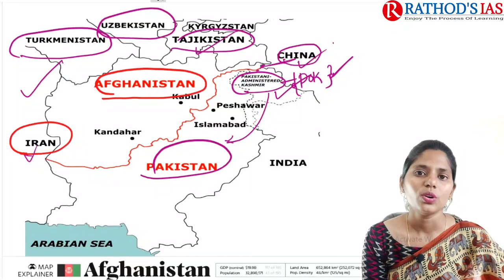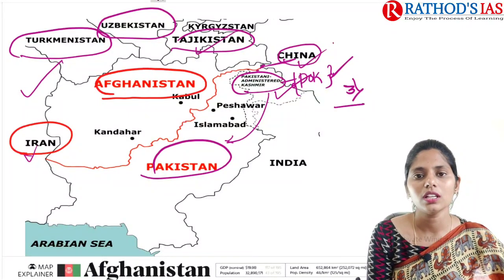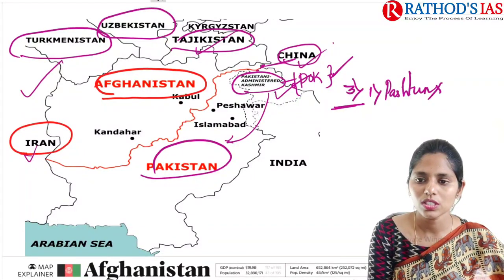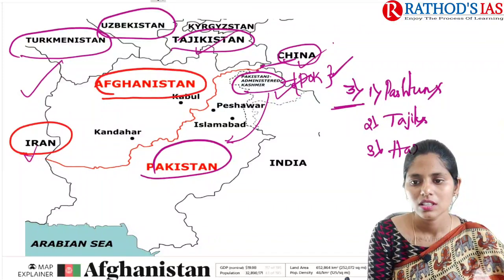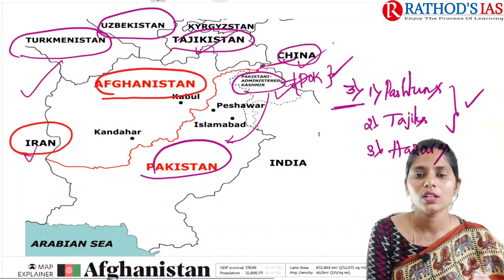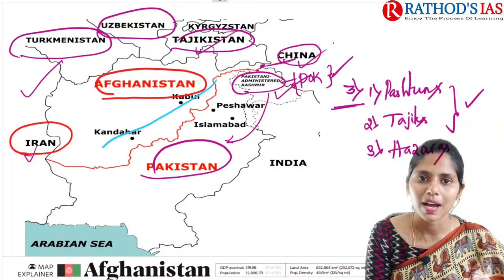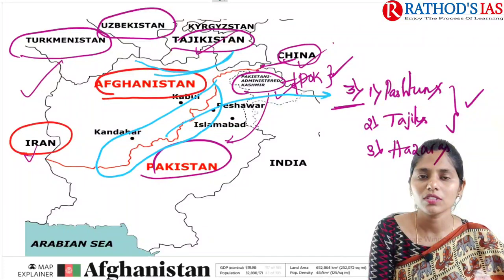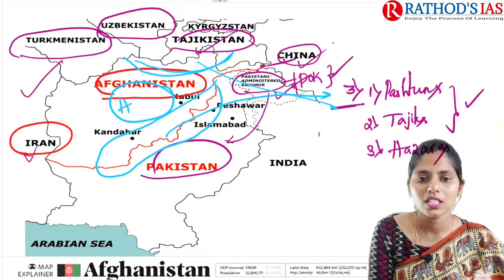We need to know which are the ethnic groups or tribal groups mainly present in Afghanistan. There are majorly three ethnic groups: first one is Pashtuns, second one is Tajiks, and third one is Hazaras. In the area sharing boundary with Pakistan we can see Pashtuns. In the Naderant province sharing boundary with Tajikistan, Tajiks are present. And in the central part, we can see Hazaras.